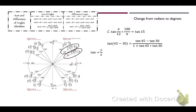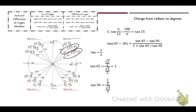Tangent is Y over X. Tangent of 45: the Y value is √2/2 and the X value is √2/2, so √2/2 divided by √2/2 equals 1. Tangent of 45 is 1. Now tangent of 30 is Y over X, which is 1/2 over √3/2. The 2's cancel, leaving 1 over √3. Rationalize the denominator and you get √3 over 3.